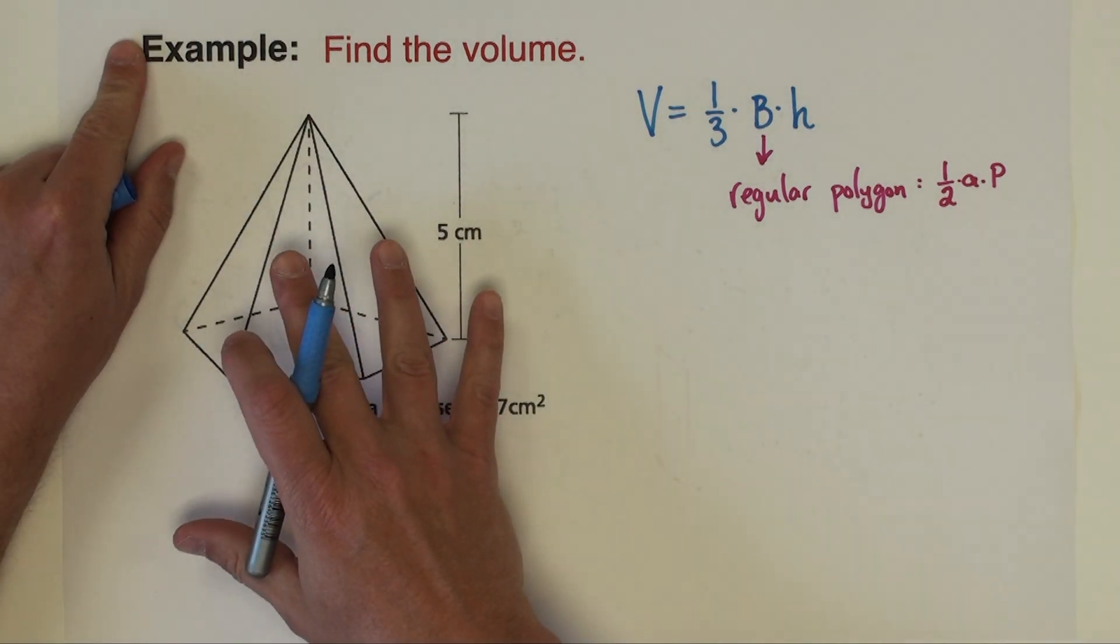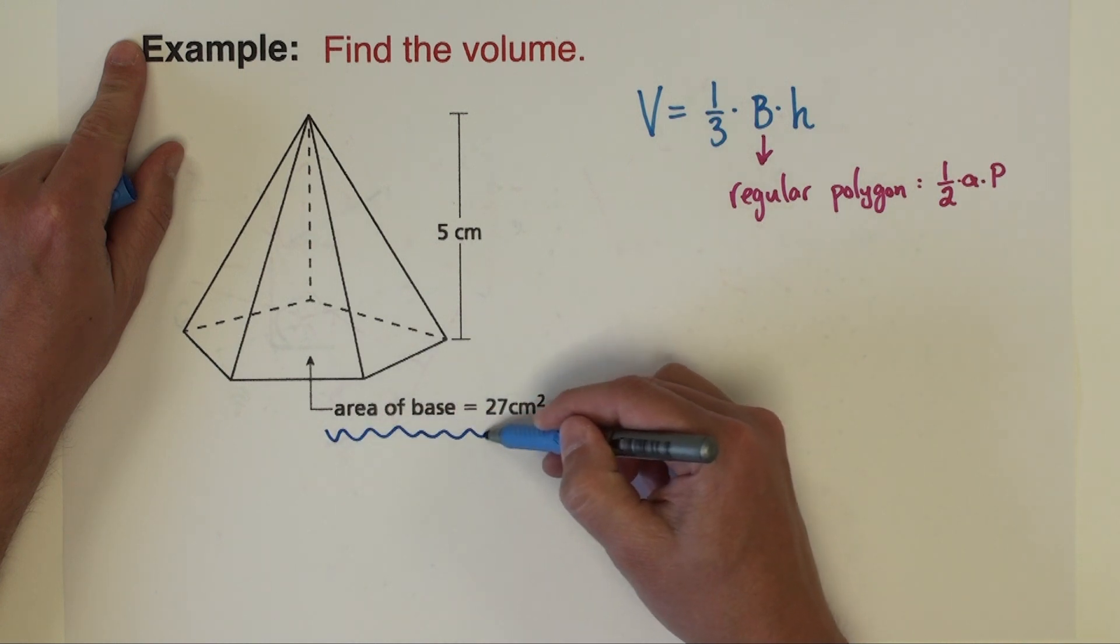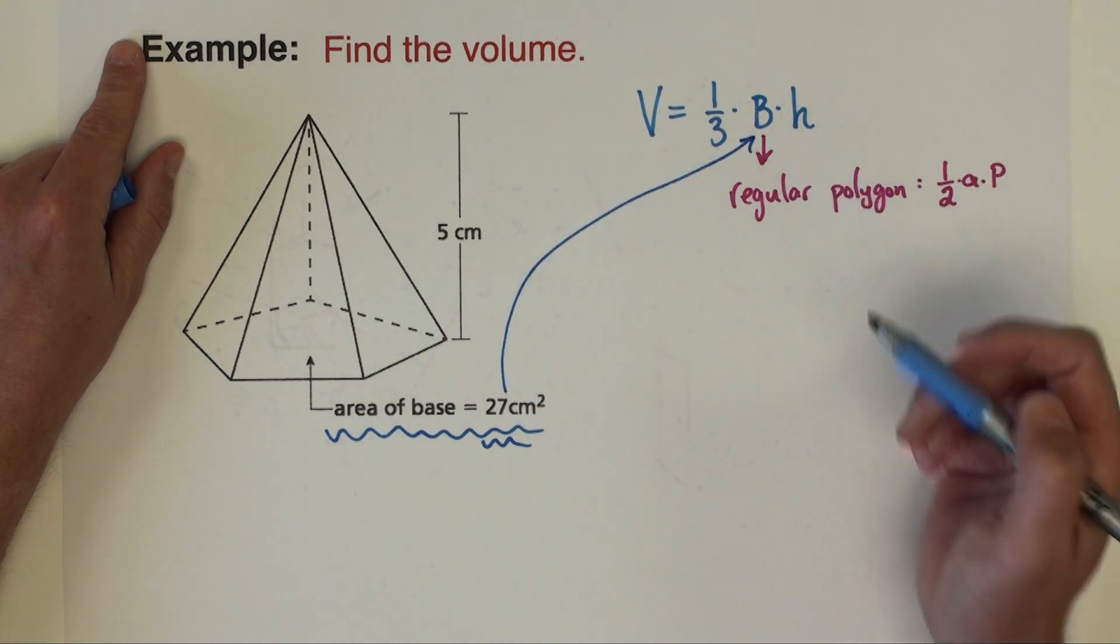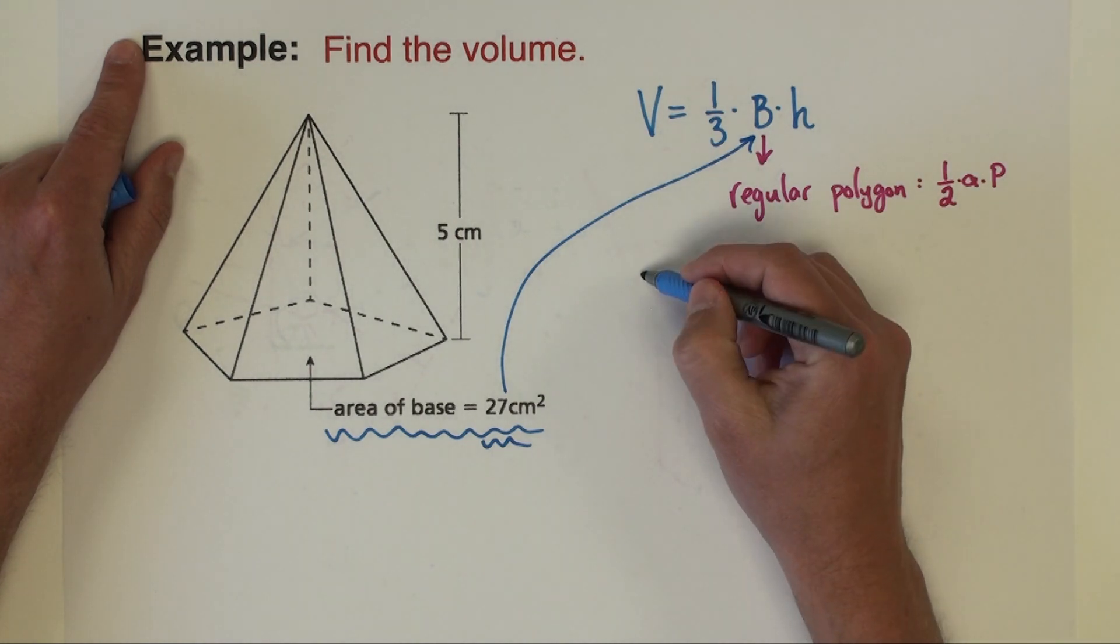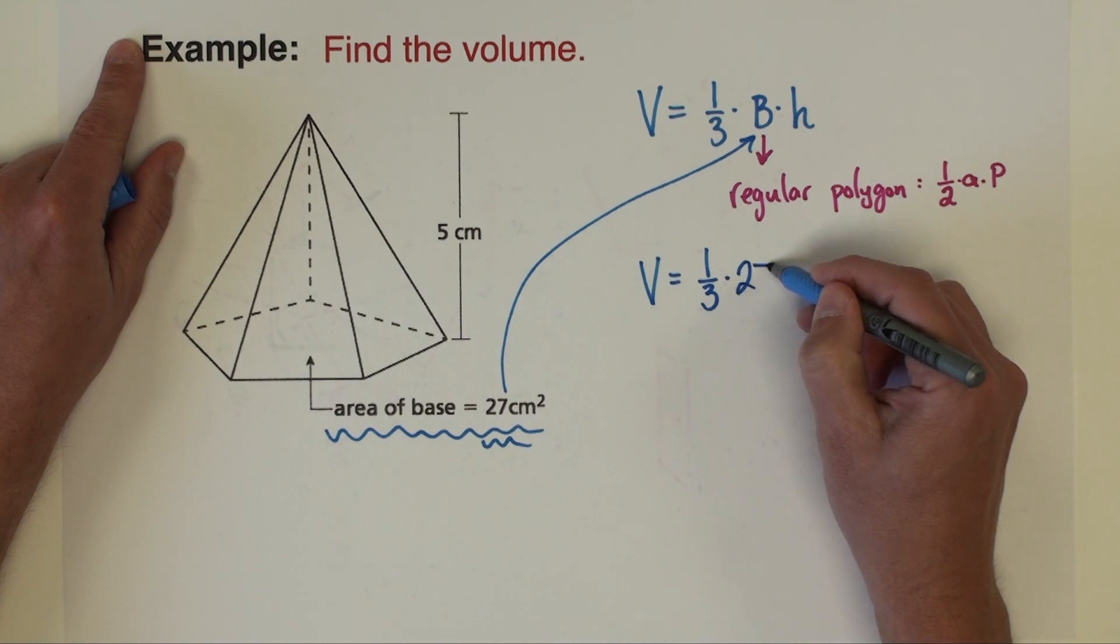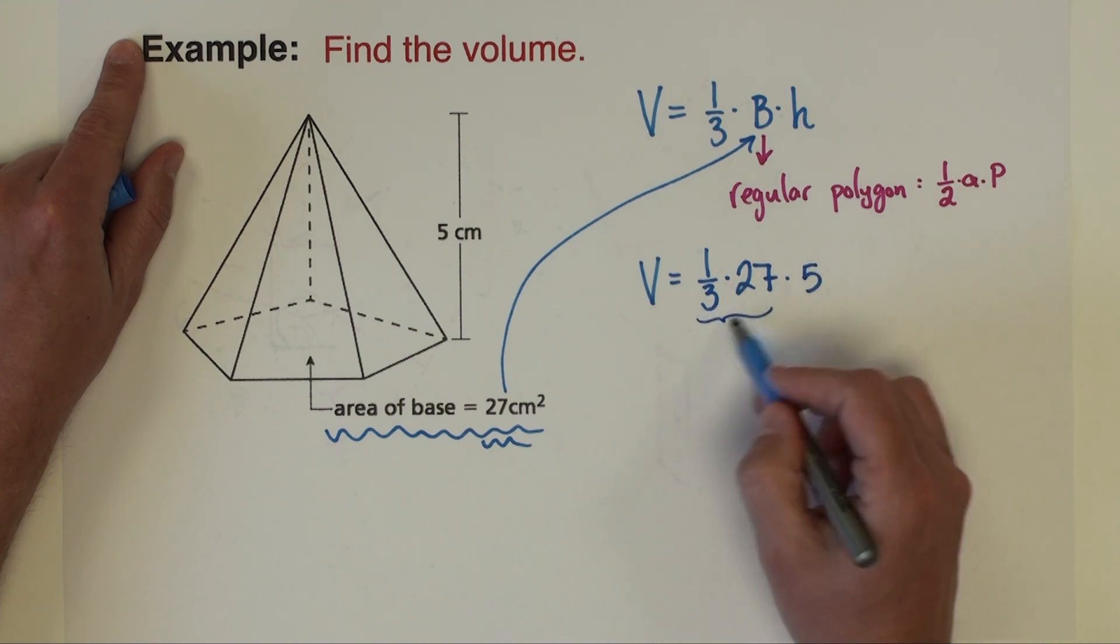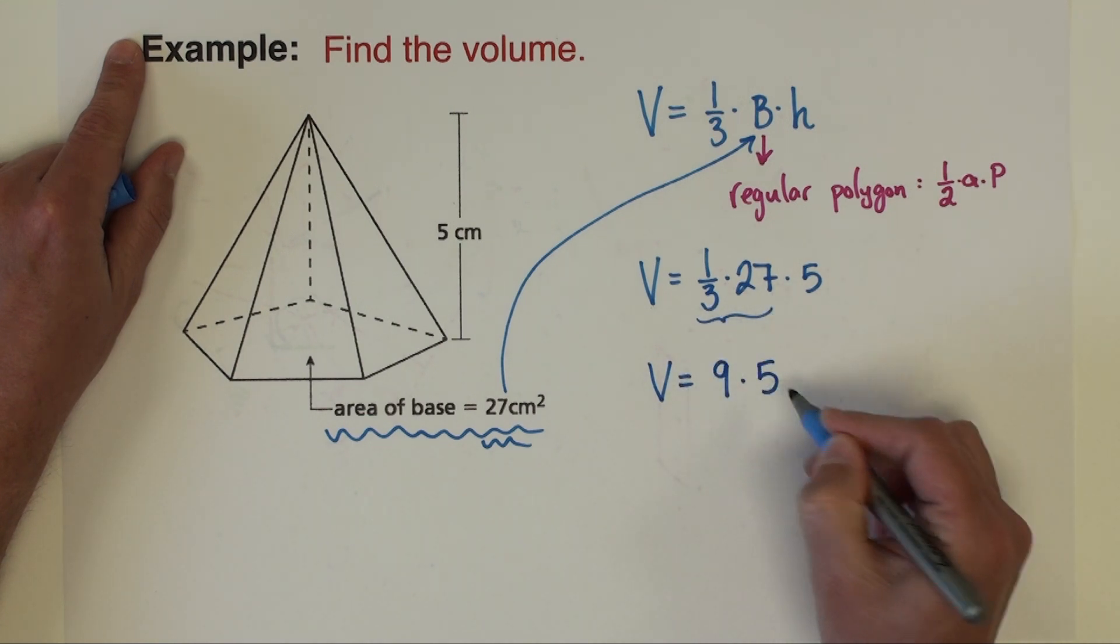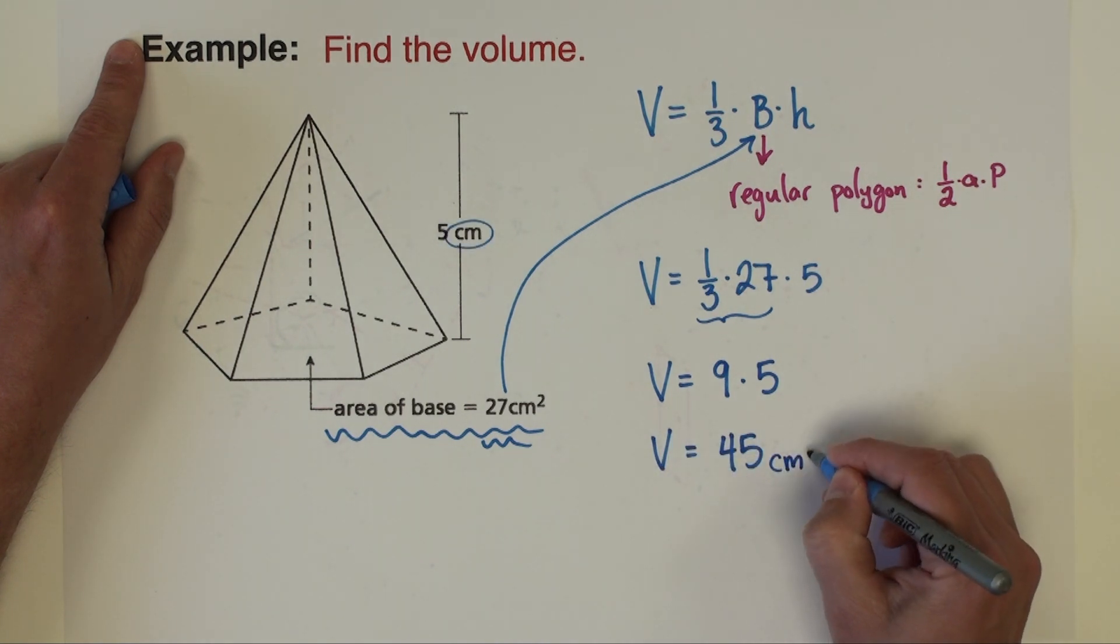This volume problem however is actually much easier because we are given in the problem what the area of the base is. So we know already what's going to go there. We don't actually have to compute it. Our volume then is one-third times the area of the base, 27, times the height, which is 5. I'm going to do this part first because 27 divided by 3 is easy mental math. That's going to be 9 times 5, and 9 times 5 is 45 centimeters cubed.